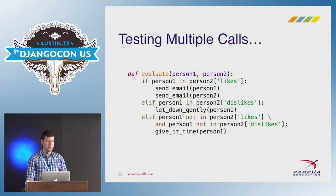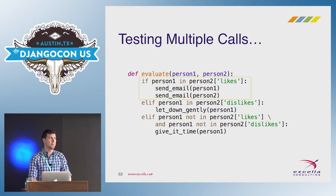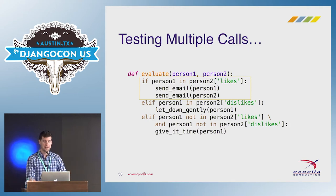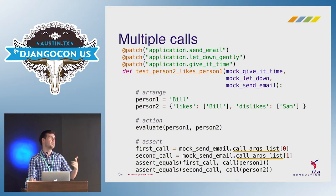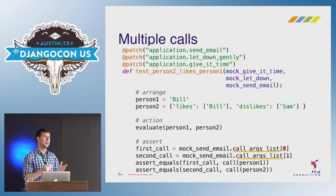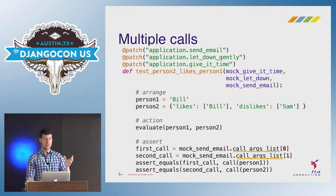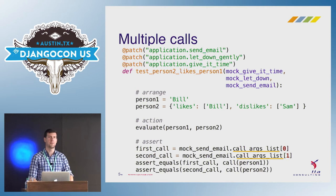What about testing things called multiple times? We talked about verifying behavior called once, but what if we call sendEmail twice? We can't easily evaluate parameters when there are multiple calls. There's a method called call_args_list, which records every time the method was called and the parameters. It returns a list of call arguments. Using the call wrapper around the parameters, we can evaluate against person one and person two: first call looking for person one, second call looking for person two.